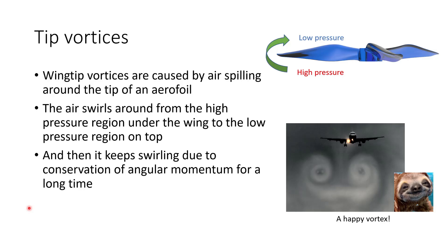Let's talk about tip vortices. Wingtip vortices are caused by air spilling around the tip of an aerofoil. The way an aerofoil — or a propeller — generates lift is by creating a high pressure region under the blade and a low pressure region on top, and that pressure difference creates lift and thrust. If you have a high pressure region next to a low pressure region, air wants to spill around the tip of the blade to equalize that pressure. Air swirls from the high pressure region under the aerofoil to the low pressure region on top, and because of conservation of angular momentum it keeps swirling, forming a wingtip vortex. You can actually see this clearly when an airline flies through clouds — the wingtip vortices off both wings make a nice smiley face.